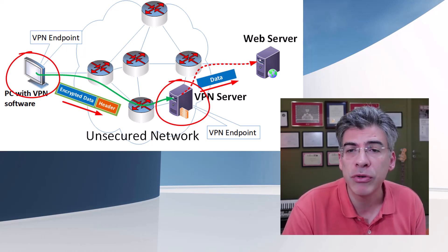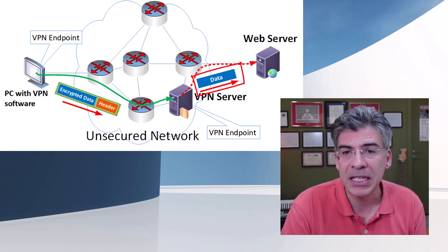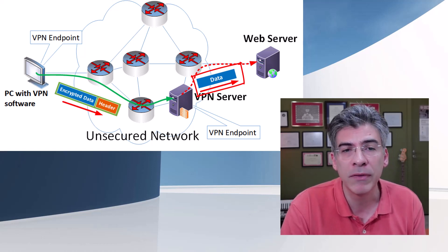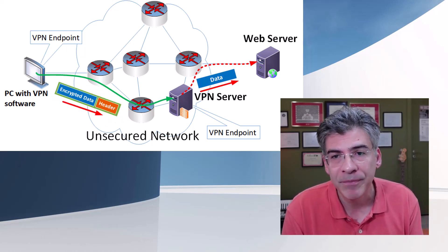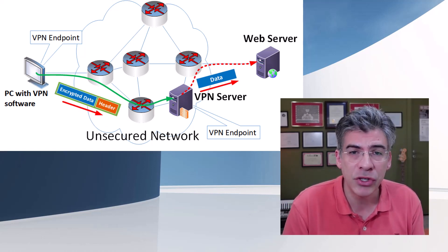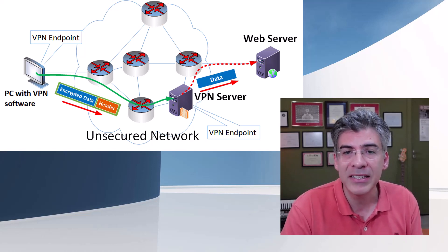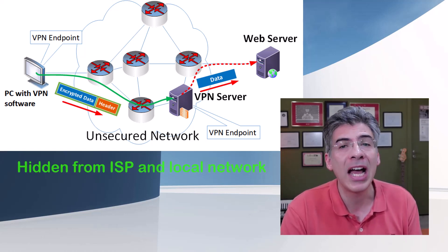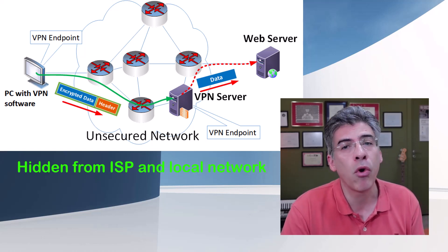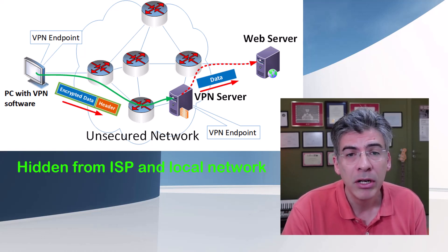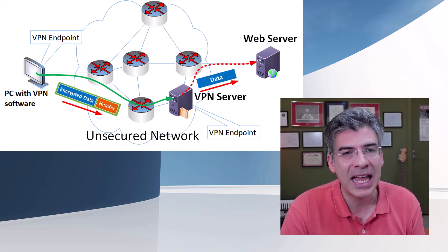The green path here shows the traversal of the encrypted data. Once that encrypted packet reaches the VPN server, it's decrypted and sent along its way to the web server. Note that the packet is secure only between your device and the VPN server — it is no longer encrypted between the VPN server and the web server. Your communication from your device onto the internet is hidden from your own ISP, and it's also hidden from any prying eyes on your local network, whether that's a corporate LAN, a coffee shop Wi-Fi network, or your home network.